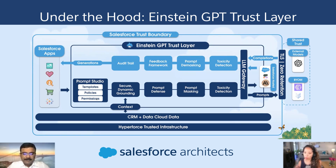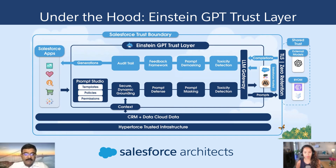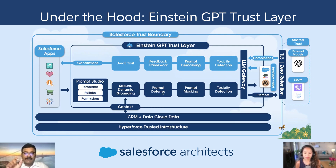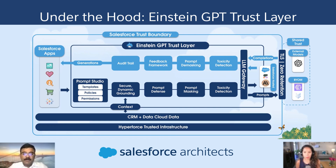I see there's something that happens before prompt masking called prompt defense. Could you talk a little bit about that? So, basically, once we retrieve the necessary data required from our customer orgs or the different sources from where customer data is stored, the dynamic knowledge grounding happens to add the context to the prompt. And as part of this prompt defense, we identify what is the sensitive information that belongs to the customer, and that is what will get masked as part of prompt masking.